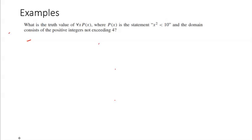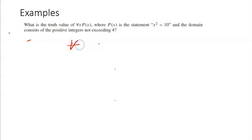We talked about what is a predicate and what is a propositional function p(x). If I assign a value of x, then the propositional function becomes a proposition, which can have either a true or a false value. We also talked about the universal quantifier — for all, or for every.